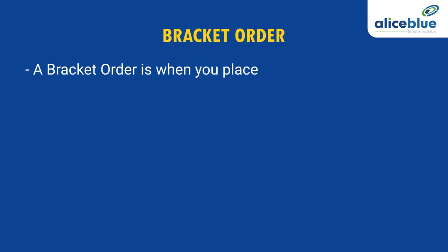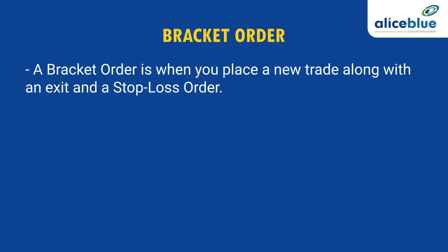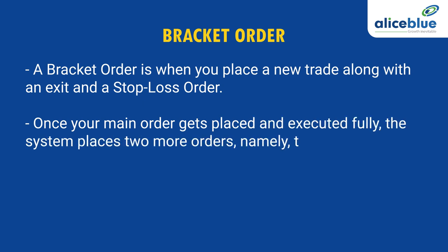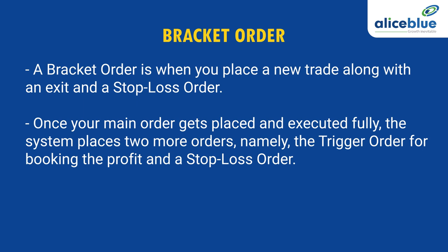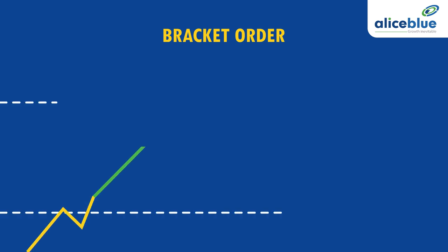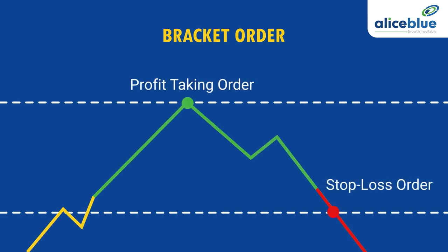A bracket order is when you place a new trade along with an exit and a stop loss order. Once your main order gets placed and executed fully, the system places two more orders, namely the trigger order for booking the profit and a stop loss order. It creates a kind of a bracket of three orders, and thus the name. When the profit taking order or the stop loss order is hit, the trade is over. It makes trading in general happen automatically.